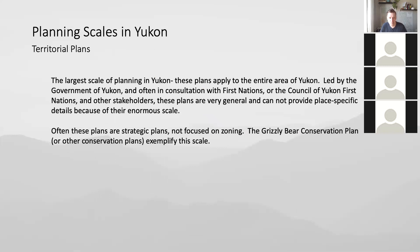Territorial plans are often done in consultation with First Nations or the Council of Yukon First Nations, and in collaboration with stakeholders like CEPAWs or Yukon Conservation Society. They're very general and target a specific problem. Another example would be the off-road vehicle regulations that have been in the news recently — what's appropriate use of off-road vehicles in Whitehorse might be completely different from up in Old Crow. You can't get too specific if you're working at a territory scale.